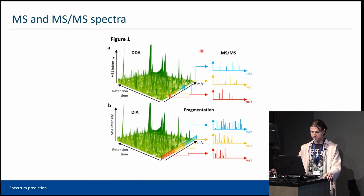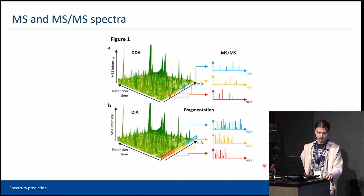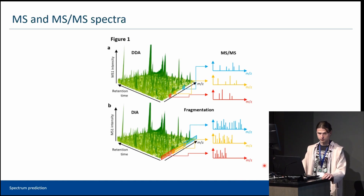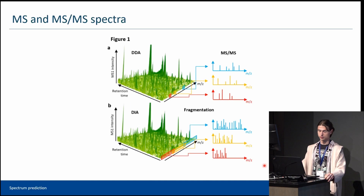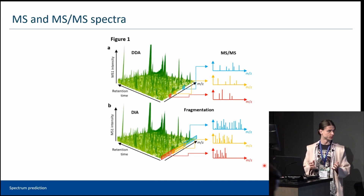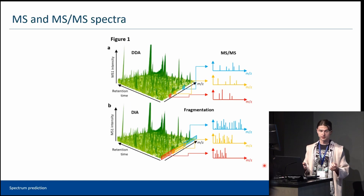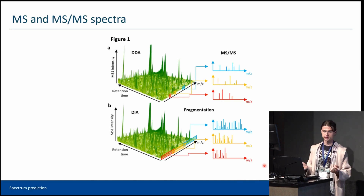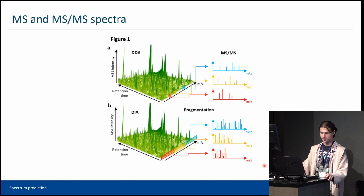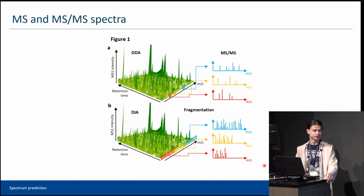To do that, shotgun proteomics relies on fragmentation spectra — the ones you can see on the right side of this picture. There are several techniques to use fragmentation spectra for peptide identification. One of the most popular ones is database search, which exploits our knowledge of peptides because they have a regular oligomeric structure, and bond breakage during fragmentation occurs primarily in the backbone. So if you know the fragmentation method and the peptide sequence, we can easily calculate the fragment masses.